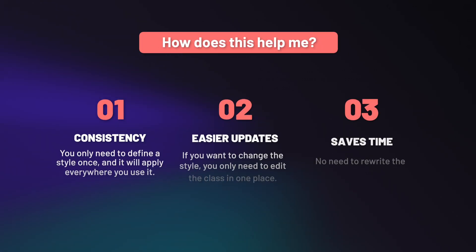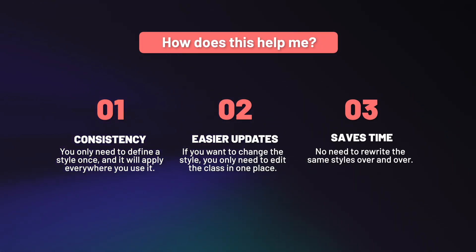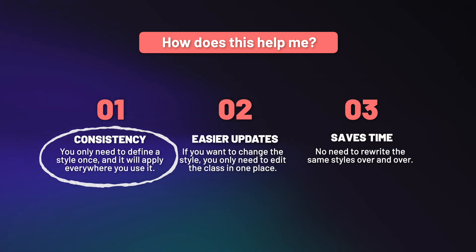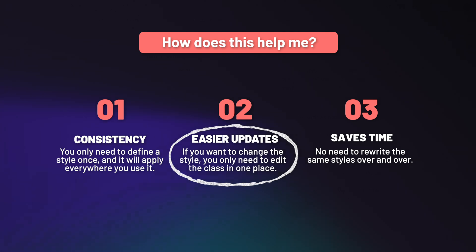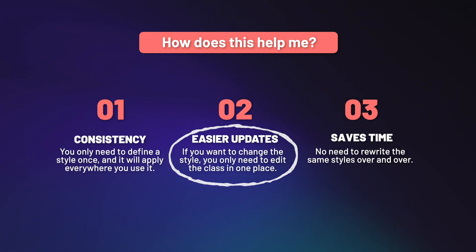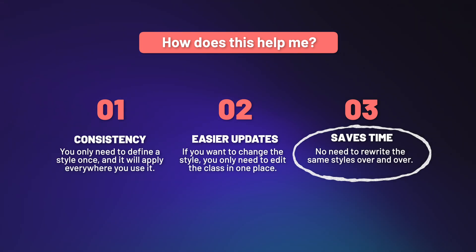Now you may be asking, why is this helpful? First of all, consistency — you only need to define the style once, and it will apply everywhere you use it. It also opens up easier updates: if you want to change the style, you only need to edit the class in one single place, and everywhere it's being used will reflect those changes. It also saves time — there's no need to rewrite the same styles over and over again.